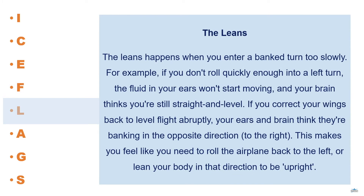The leans happens when you enter a banked turn too slowly. For example, if you don't roll quickly enough into a left turn, the fluid in your ears won't start moving and your brain thinks you are still straight and level. If you then correct your wings back to level abruptly, your ears and brain think they are banking in the opposite direction — to the right. This makes you feel like you need to roll the airplane back to the left, or lean your body in that direction to be upright.